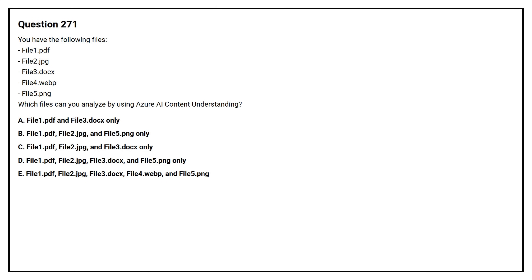Option number 271. You have the following files: file 1.pdf, file 2.jpg, file 3.docx, file 4.wip, file 5.png. Which files can you analyze by using Azure AI Content Understanding?